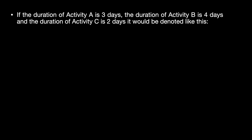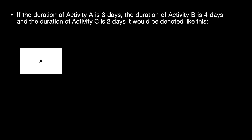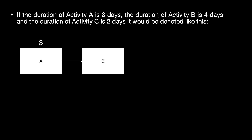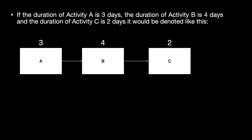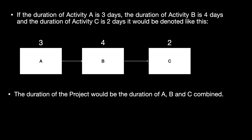Now let's add durations to this diagram. If we had activity A with a duration of three days, activity B with a duration of four days, and activity C with a duration of two days, it'll look something like this. So the duration of the project would be the duration of activity A, activity B, and activity C combined — three plus four plus two — which is equal to nine.